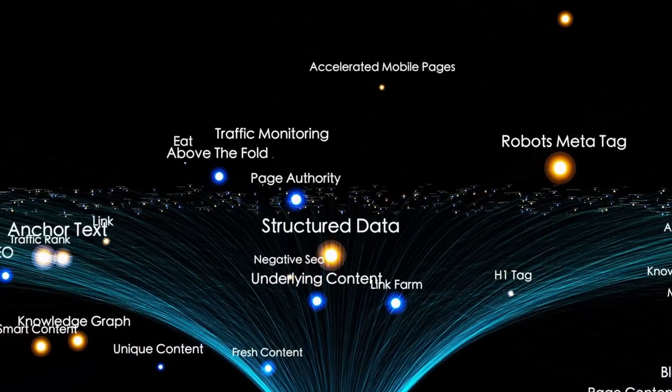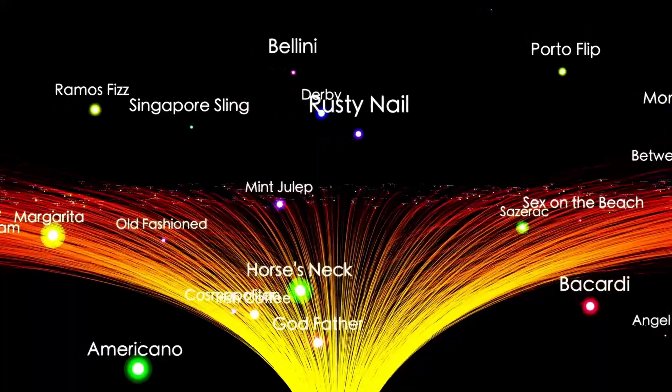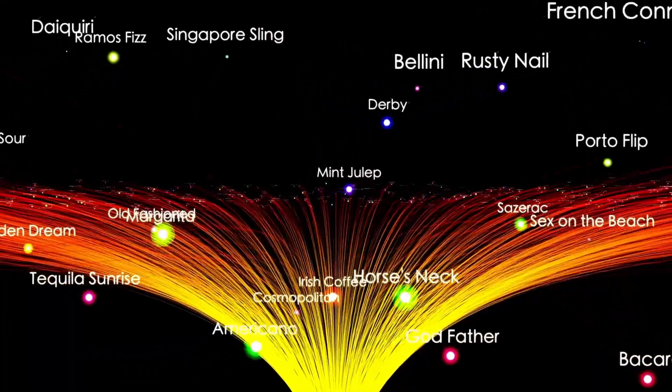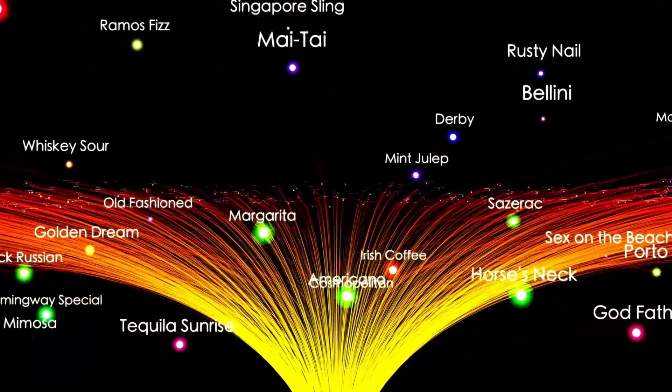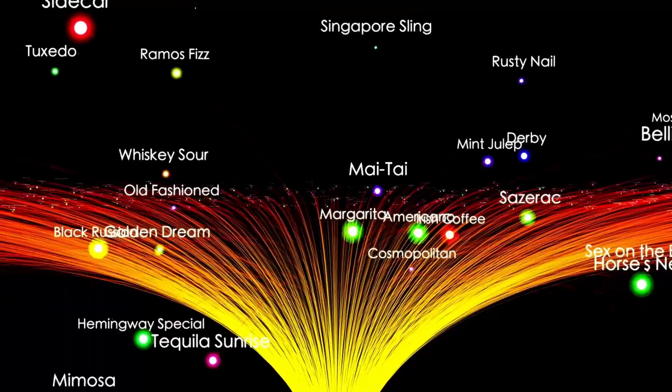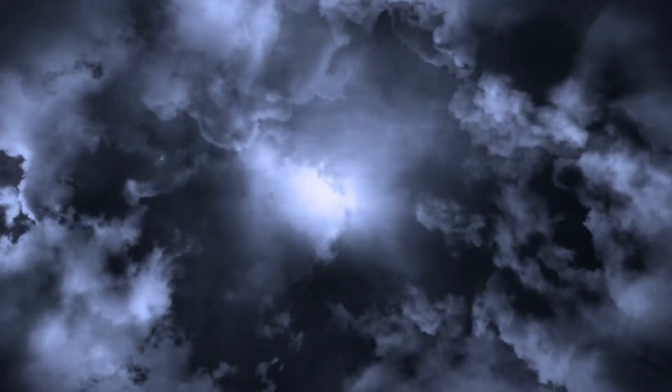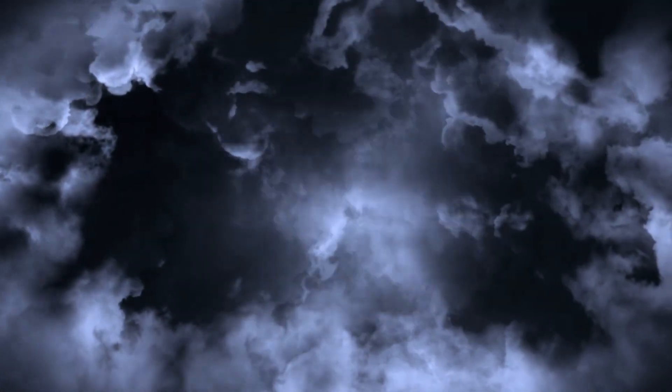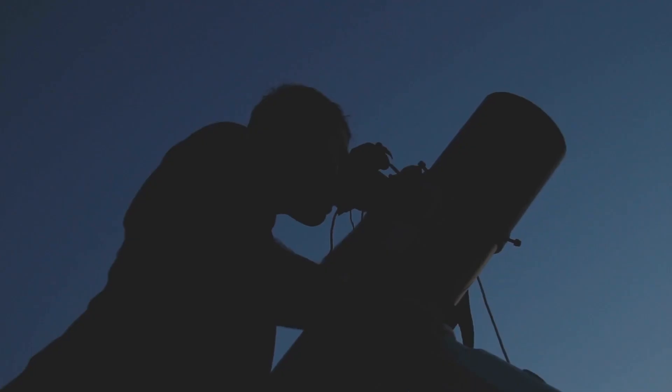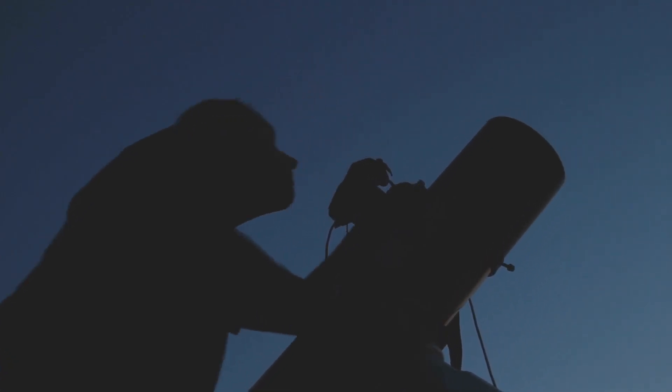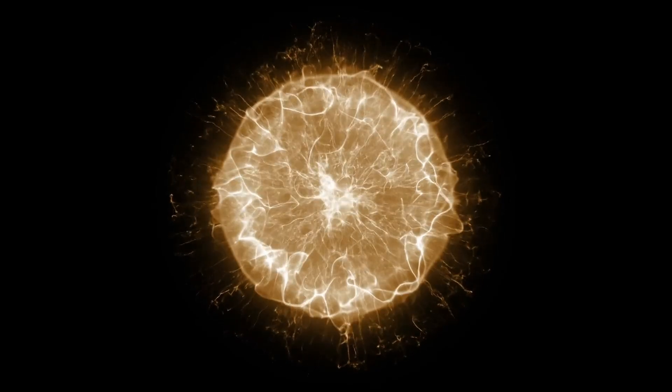Some theorize this might be a seed ship, an ancient carrier of life designed not just to explore, but to colonize. And if true, then Earth may not be a destination by accident. It could be a target. Not of war, not of destruction, but of assimilation. A place to plant, observe, and eventually merge with.